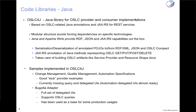OSLC4J also takes care of building some of the OSLC artifacts for you, such as a service provider document and resource shapes, based on the annotations you add to your resources and JAXRS services. We've come up with quite a few samples in OSLC4J. There are stub providers — pretty basic samples for change management, quality management, and the automation specification — giving examples of how you do your services, your GETs, PUTs, POSTs, and creation of resources. They don't have business logic behind them; they show how to do the interface itself.